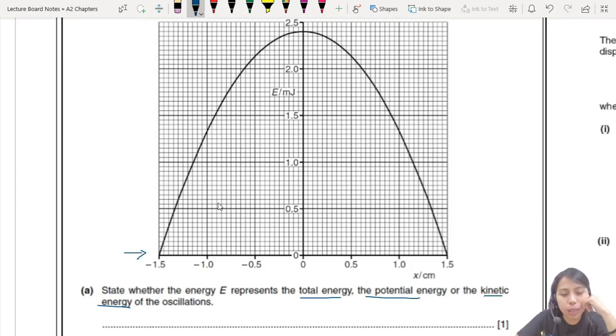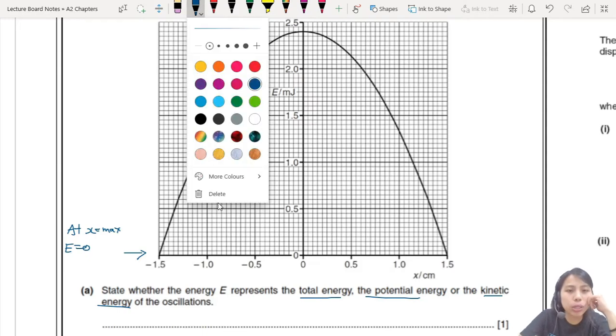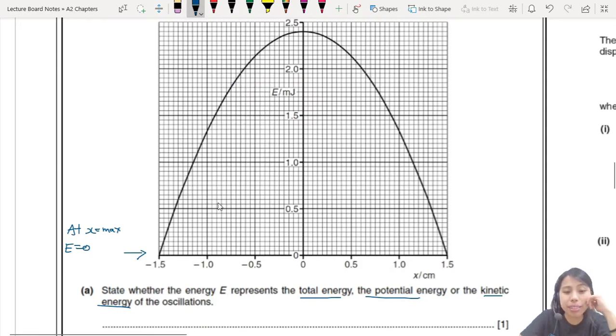You need to look at some characteristics of the graph. Whatever energy graph this is, when the displacement is max, so at X equals to maximum, you have the lowest or zero energy. So what energy is zero when you are at a maximum displacement? Well, the answer is kinetic energy. Because as you go here, at one point, you stop moving.